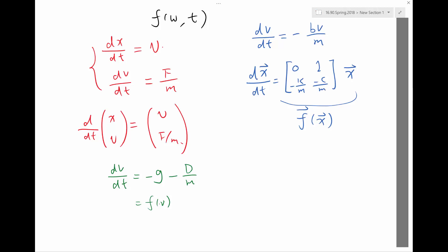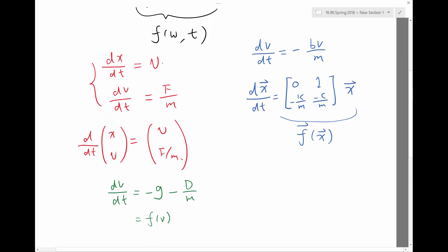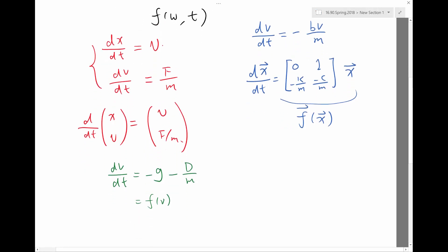You can have first-order non-linear ODE or have second-order linear ODE. I mean, it's completely independent. So, if is non-linear, if D is proportional to V squared, so D is a function of V that is not linear.